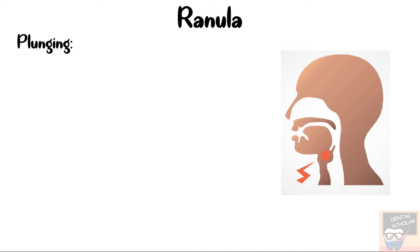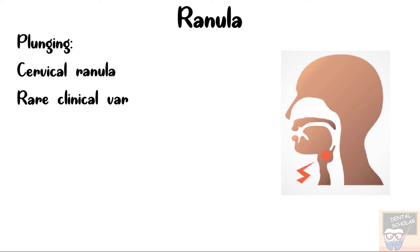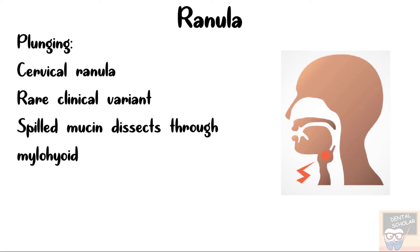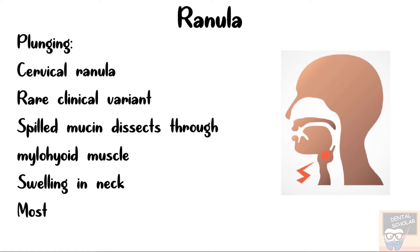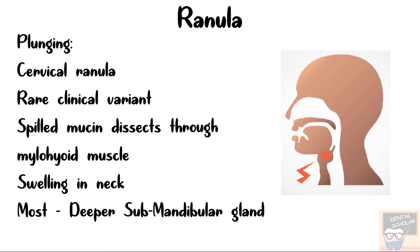The plunging ranula is also known as cervical ranula and it is a rare clinical variant. It occurs when the spilled mucin dissects through the mylohyoid muscle and produces a swelling within the neck. Most of these plunging ranulas arise in the deep submandibular space without an intraoral swelling, so the intraoral swelling may not be visible in case of a plunging ranula.